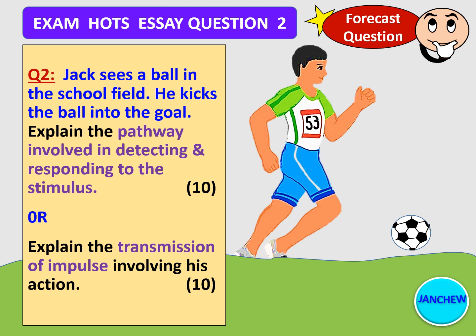Here is a second question for you to practice using the acronym and writing the essay answer. Exam HOTS question number two, which is also a forecast question. Jack sees a ball in the school field. He kicks the ball into the goal. Explain the pathway involved in detecting and responding to the stimulus — 10 marks. Or alternatively: explain the transmission of impulse involving his action — 10 marks. For both questions the answers are the same. Take a moment to apply the acronym and write the answer on a piece of paper. You can pause the video to read the question again and determine the stimulus, receptor, and so forth. Write it out as a full essay answer and we will look at the answer after this.